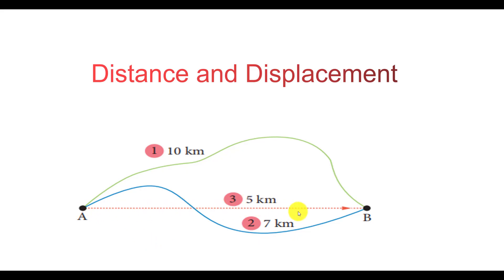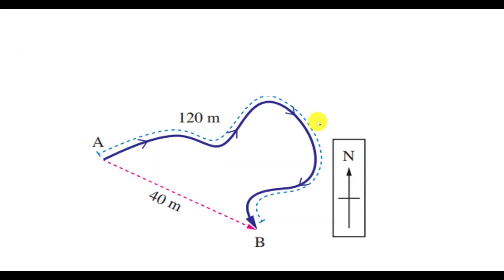The shortest distance between the two points is called displacement. The other paths — path 1 and path 2 — are not the displacement, but they are distance. The total distance traveled by the object is 120 m, and the displacement of the object is 40 m. When you consider displacement, you have to note the direction as well — it holds good only when you denote the direction. For distance, it is not necessary to denote the direction, but for displacement it is necessary, because distance is a scalar quantity and displacement is a vector quantity.